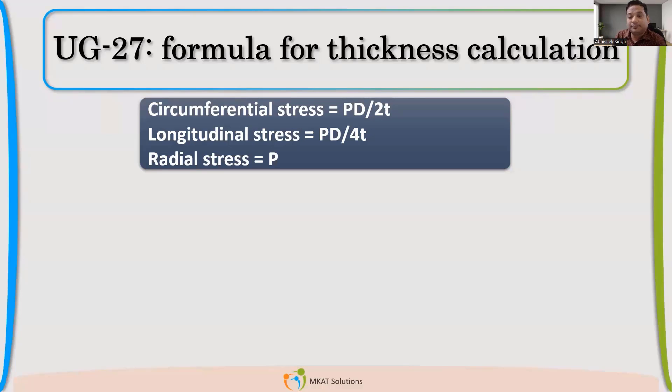So now by seeing these three formulas, you'll come to know that circumferential stresses are governing the stress value. So thickness will be governed by circumferential stresses. Radial stresses are negligible because only P, if you compare it with D/2T.